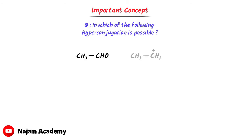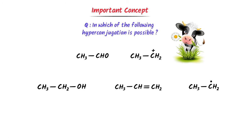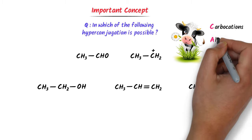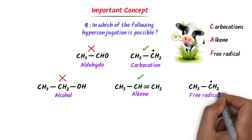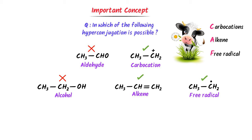Now, in which compounds is hyperconjugation possible? Remember the acronym CALF: hyperconjugation is only possible in carbocations, alkenes, and free radicals of hydrocarbons. The first compound — aldehyde — hyperconjugation is not possible. The second — carbocation — hyperconjugation is possible. The third — alcohol — not possible. The fourth — alkene — possible. The fifth — free radical — possible. Remember: hyperconjugation is only possible in CALF.